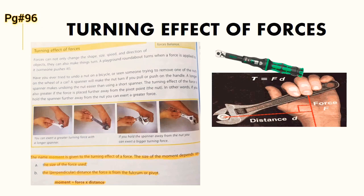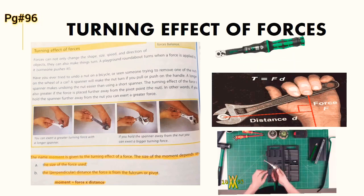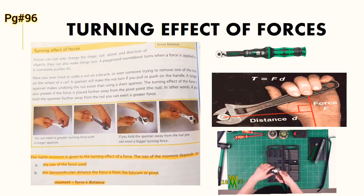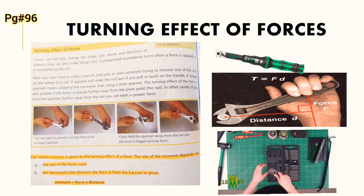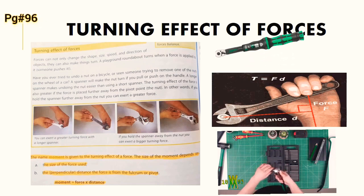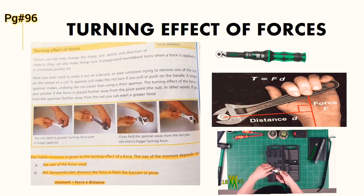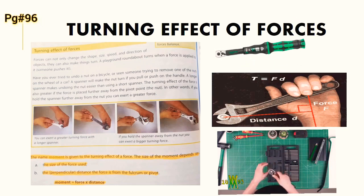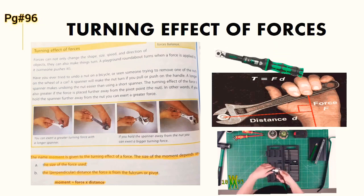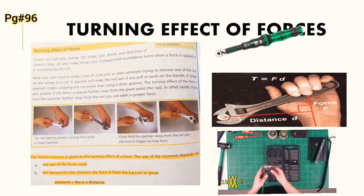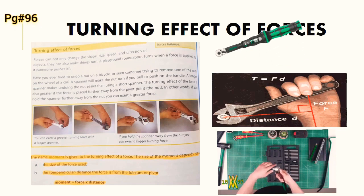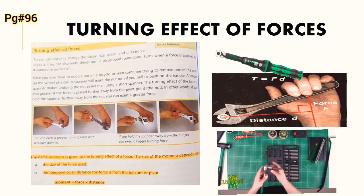Now we will move to page 96: the turning effect of forces. Forces cannot only change the shape, size, speed, and direction of an object — they can also make things turn. This turning effect of force is called a moment. The name 'moment' is given to the turning effect of force. The size of the moment depends on the size of the force used and the perpendicular distance of the force from the fulcrum or pivot.